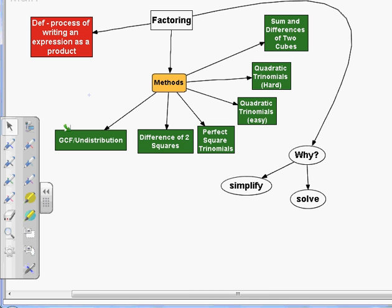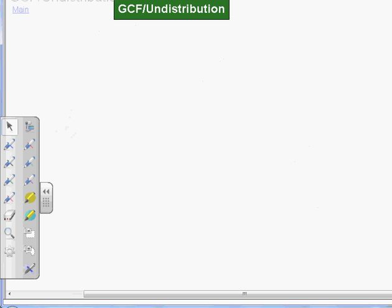Welcome to this second video in a series on factoring. You should have already watched the video on overviewing the factoring process, and now we're going to drill down and look at the methods individually one at a time. In this video, I'm just going to focus on this first method here, which is GCF/undistribution.